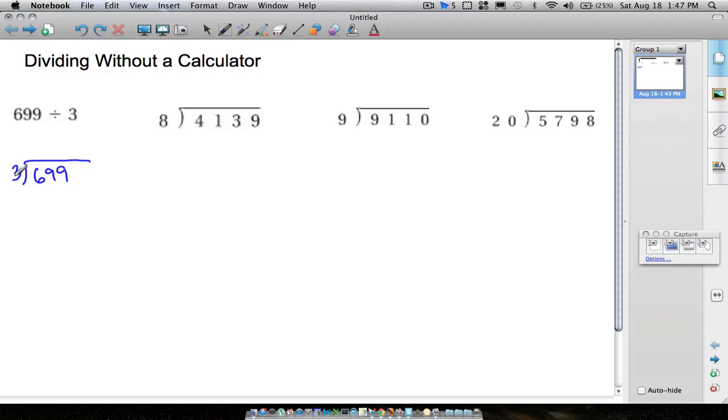To do this, when you have a one-digit number right here, you just want to see how many times 3 goes into that first number. 3 goes into 6 two times, and then you multiply. 2 times 3 is 6, and we always subtract whatever we get when we come back and multiply. So we subtract, we get 0.